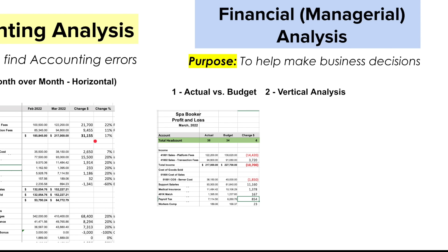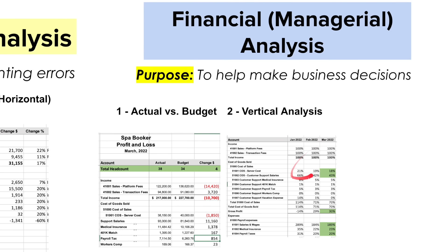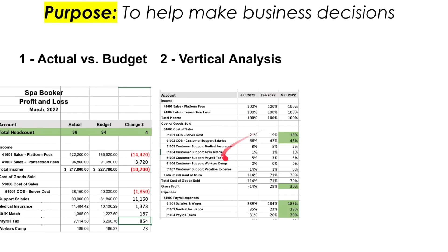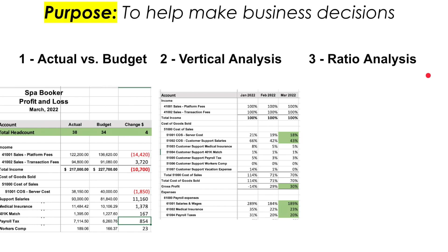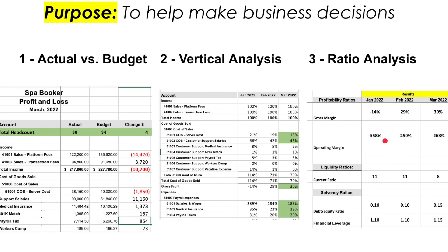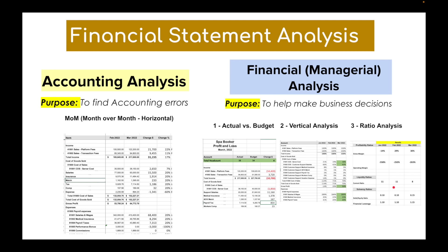The second type is vertical analysis. As opposed to horizontal, where we go left to right, with vertical we go top to bottom — measuring line items on the income statement as a percentage of one fixed item, most commonly revenue. The third is ratio analysis, comparing two financial figures to each other to get a result as a percentage or ratio. The most common example is the current ratio, which measures current assets versus current liabilities to determine whether the company has sufficient funding to meet its short-term obligations.